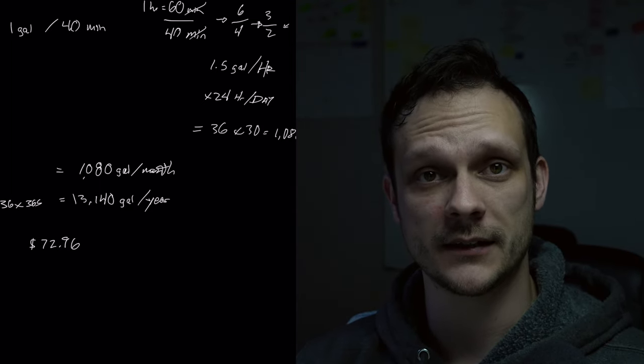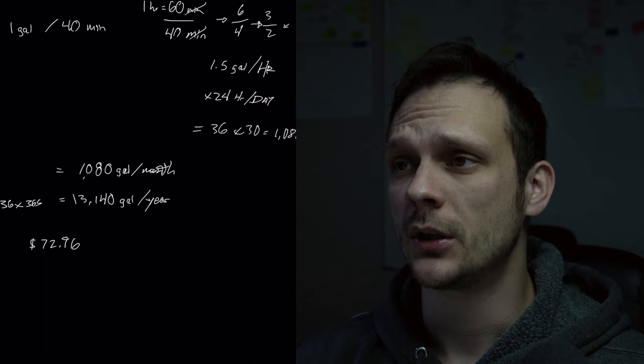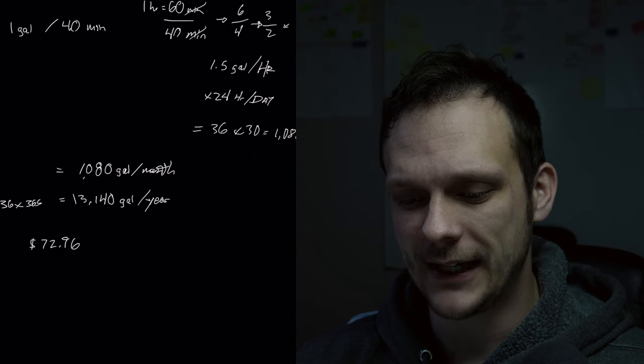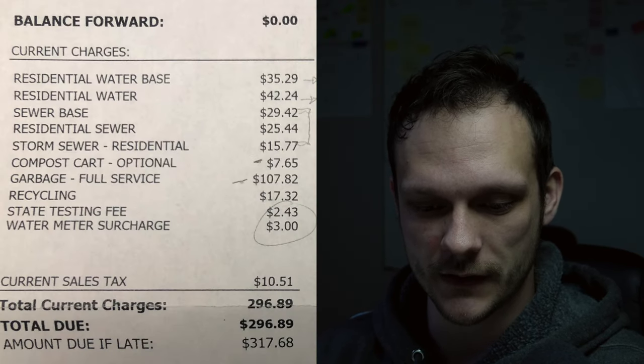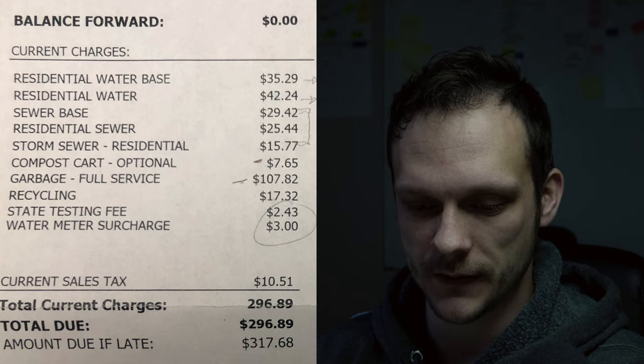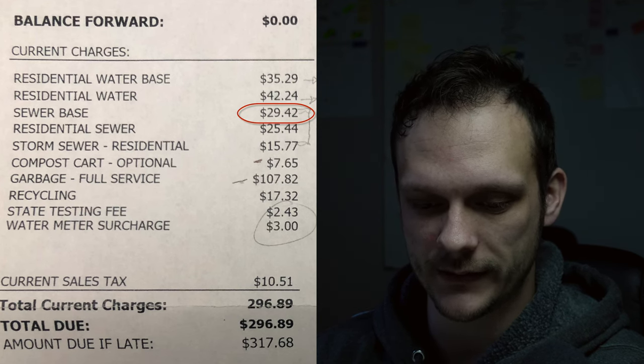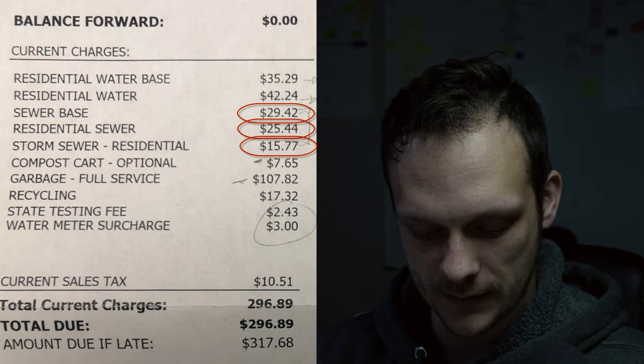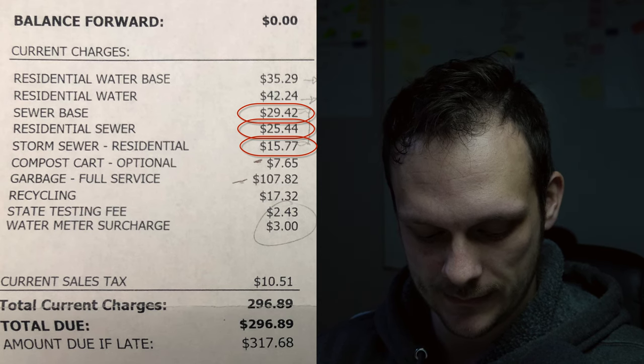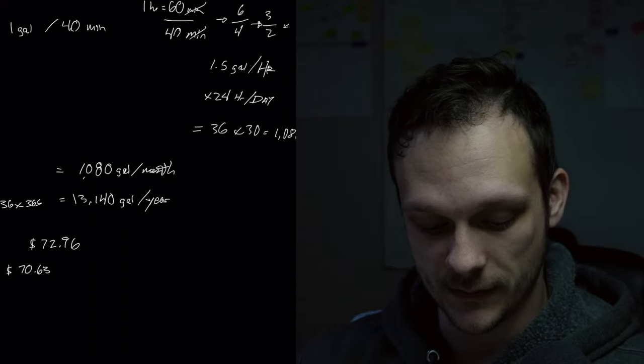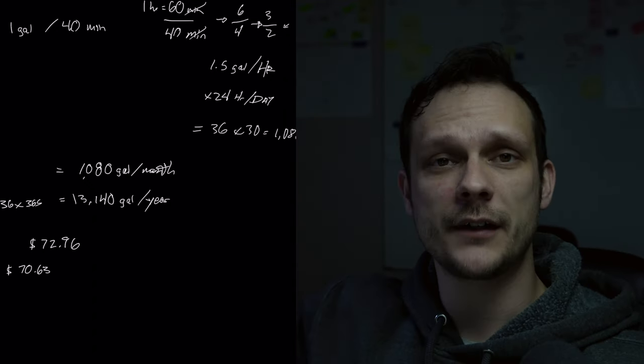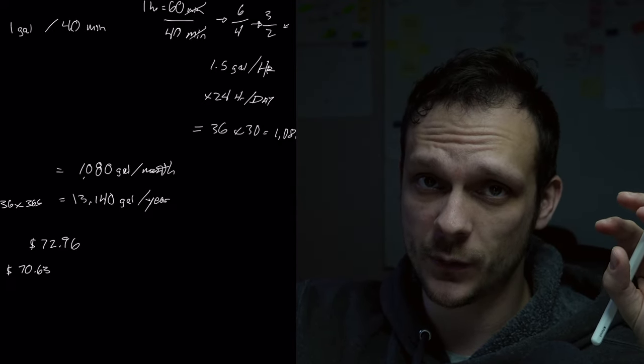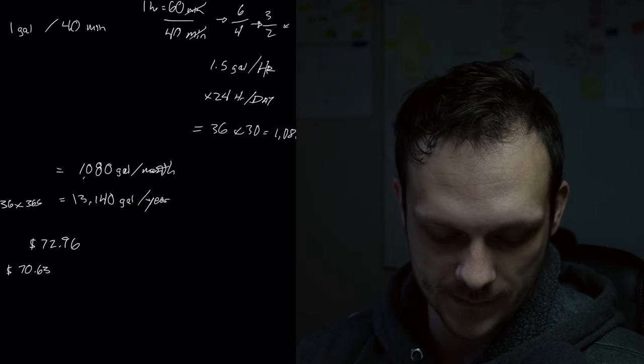That is one number we can take. The other number we can consider when we consider the cost of water, because we're also paying for this too, right? Like yes, you pay the actual cost of water, but then you also pay for it to be carried away. So then if I add in these three other water-related charges here that have to do with exiting water, used water, you could say, which is going to be our sewer base fee, our residential sewer, and our stormwater residential. When I add those costs up, we get $70.63. And you can see that's about equal to that.